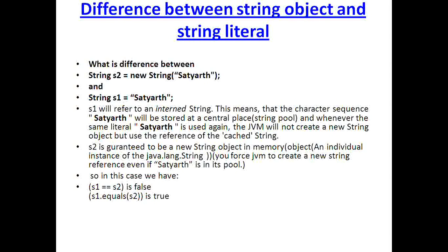Difference between string object and string literal. This is one of the most important scenarios which every Java programmer might have faced — when to use a string object, when to use a string literal. If you see in the example, S1 is a string literal, or basically an interned string. This means that the character sequence — in this example 'Satyarth' — will be stored at a central place, which is nothing but a string pool, which is a part of JVM only.